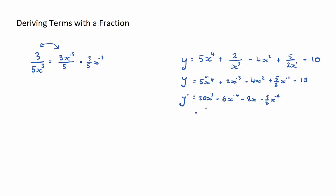Now let's clean this up, and we should always leave our powers in positive form. This becomes 20x to the 3. We will take the x to the power of minus 4 to the denominator of the fraction again, so this becomes minus 6 on x to the power of 4, minus 8x, and this one here becomes minus 5 on 2x to the power of positive 2, or 2x squared. And that's our derivative there.